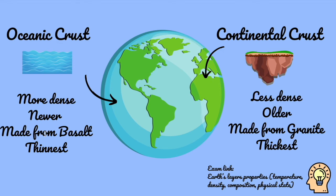Oceanic crust is made from basalt — an igneous rock — compared to continental crust, which is made from granite. With basalt underneath the ocean, the crystals are much smaller. That's because when lava comes out of a volcano under the water, it cools down much more quickly, producing smaller crystals. Granite, like in kitchen worktops at home, has much bigger crystals. That's because things cool down much more slowly in air than in water, resulting in much larger crystals.